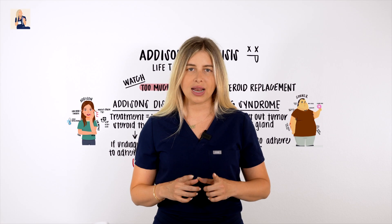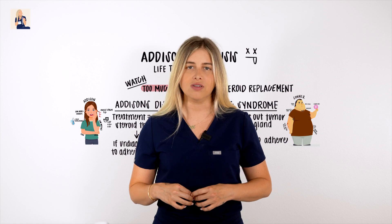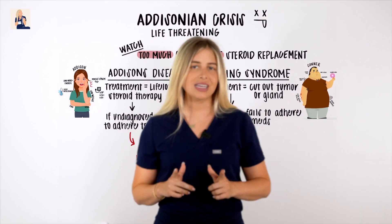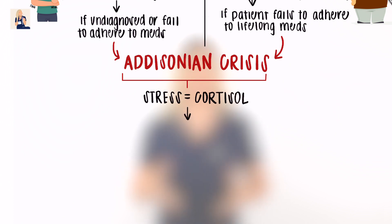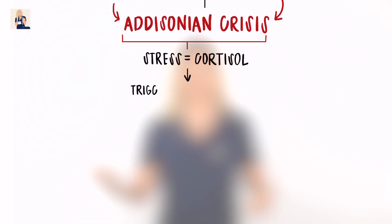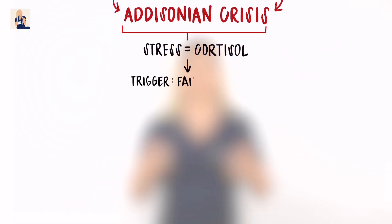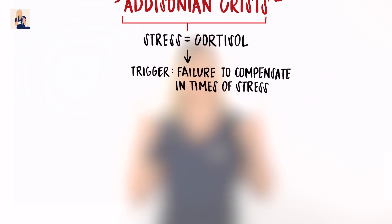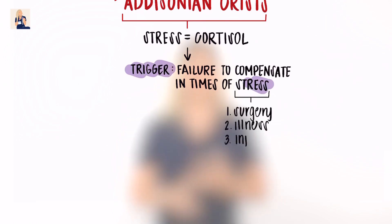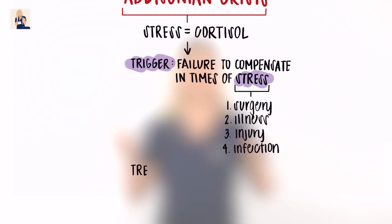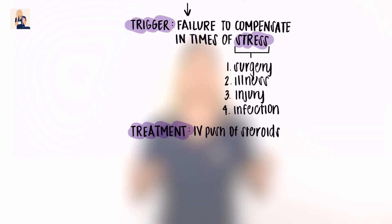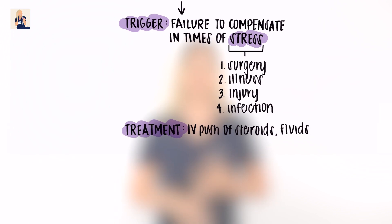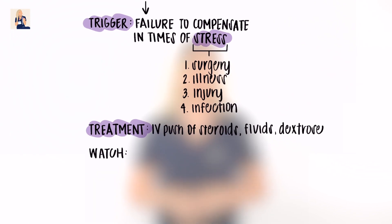Addisonian crisis is a life-threatening state caused by insufficient levels of cortisol in the body, leaving the body in crisis mode. Remember: stress equals cortisol — we need cortisol to deal with stress. One of the main triggers of Addisonian crisis is a failure to compensate in times of increased stress, such as surgery, illness, injury, or infection. To treat Addisonian crisis, the nurse will give an IV push of steroids and, if needed, begin fluids or dextrose for signs of low blood pressure or hypoglycemia.